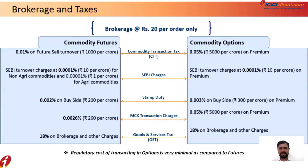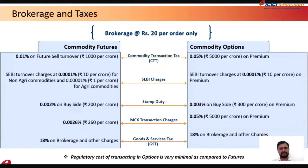There are also SEBI charges of 0.0001% (10 rupees per crore) for futures, stamp duty of 0.0002% on the buyer side, MCX transaction charges of 260 rupees per crore, and GST on a few charges. You can compute all these charges before entering a trade using the brokerage calculator available on the ICICI Direct website under the Commodity and Currency section, accessible without logging in.